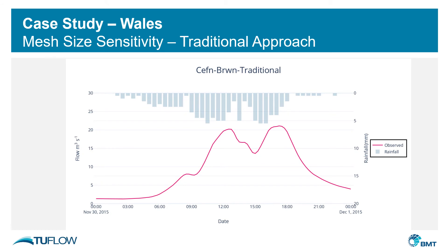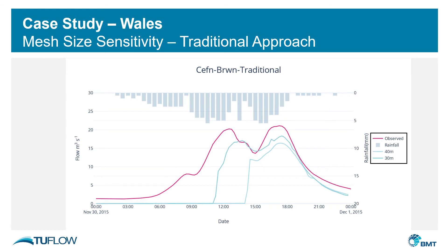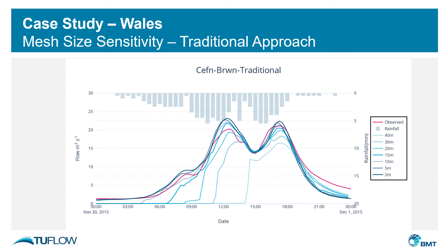To take this one step further, this is output from a direct rainfall model from Wales in the United Kingdom. We have a multi-peaked rainfall event with a gauge at the bottom of the catchment, and the observed flow hydrograph is shown in pink. If we use a 40-meter cell size, the model output using the traditional cell schematization approach isn't particularly great. However, we can improve the model output by reducing the cell size — scrolling through outputs from a range of grid cell sizes shows that the results converge on the observed flow hydrograph, demonstrating mesh dependency.